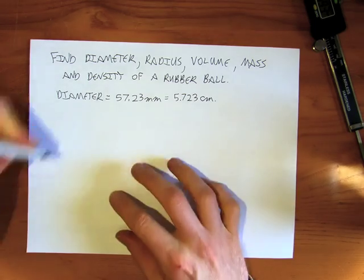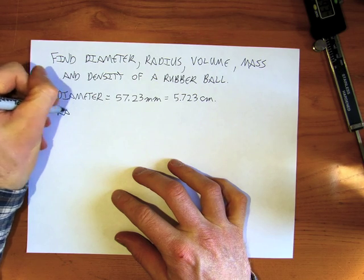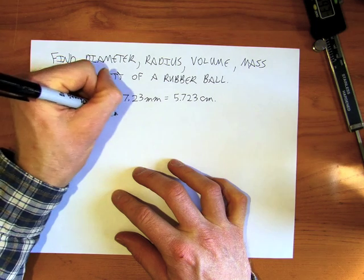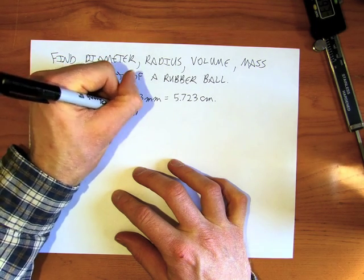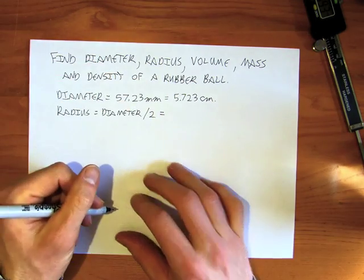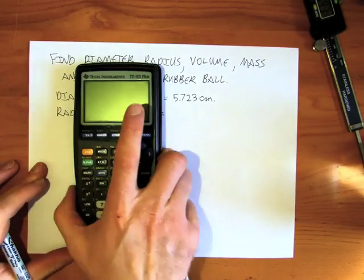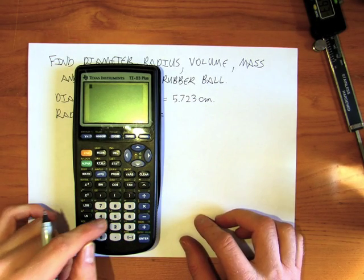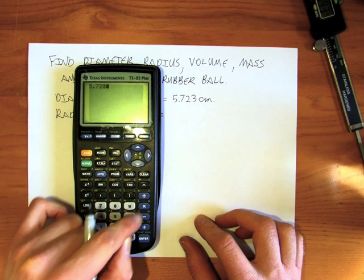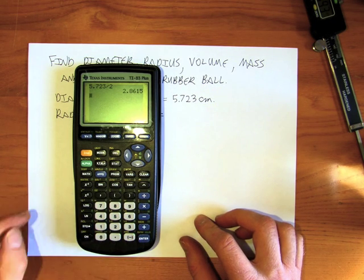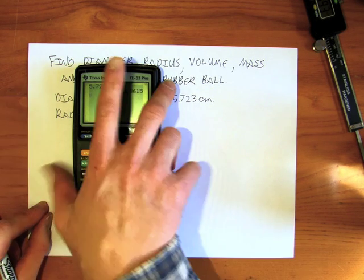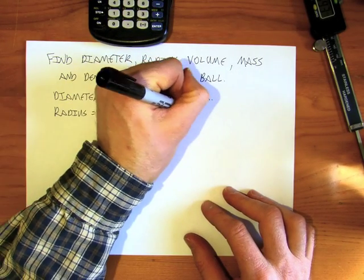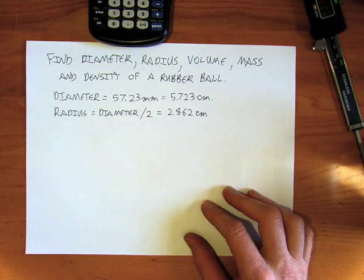Now, in order to find the radius, that's going to be the diameter divided by 2, so that's going to be 5.723 divided by 2 — 2.862. That's the radius.